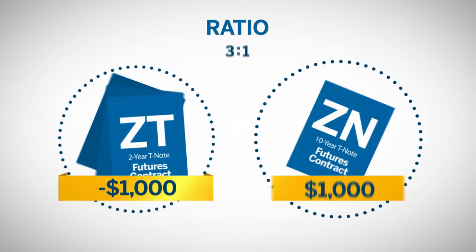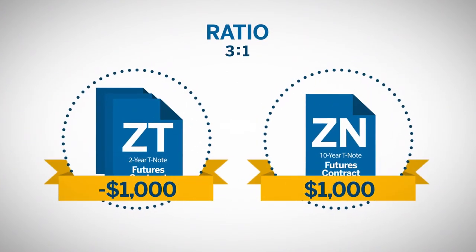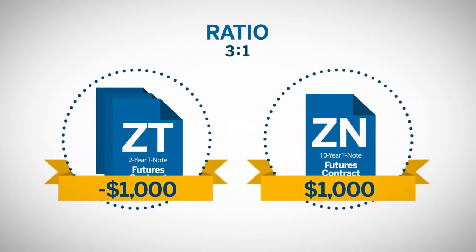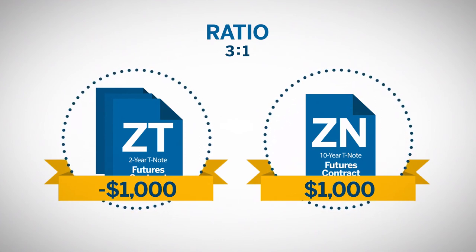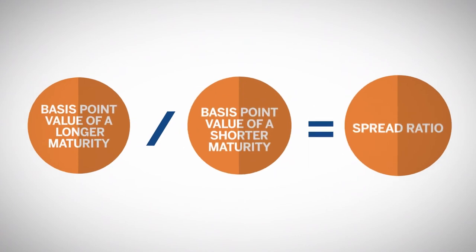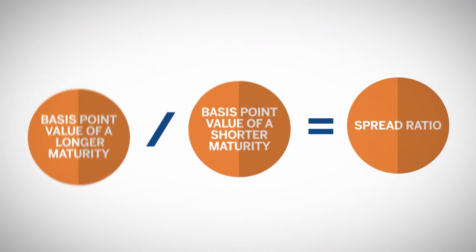A trader can trade more of one contract and less of another. This is called the spread ratio, and will remove the impact of changes in the market direction. The spread ratio equals the basis point value (BPV) of the long bond divided by the basis point value of the short bond.